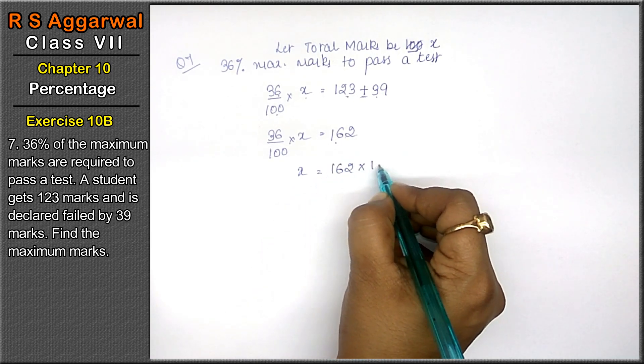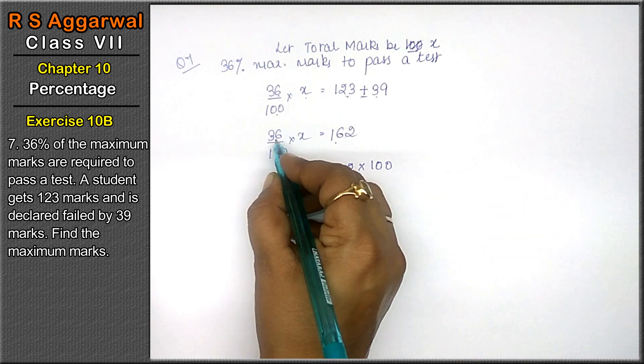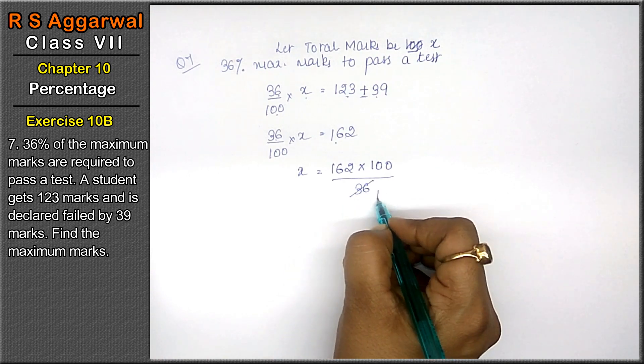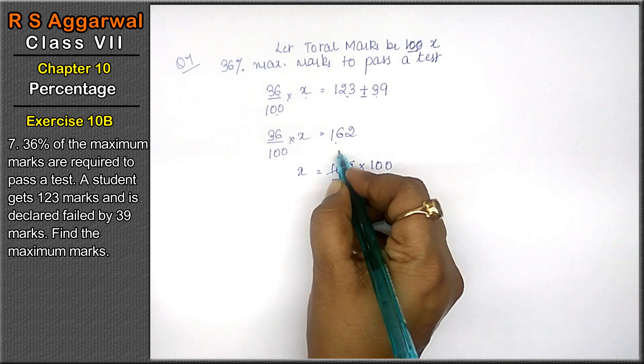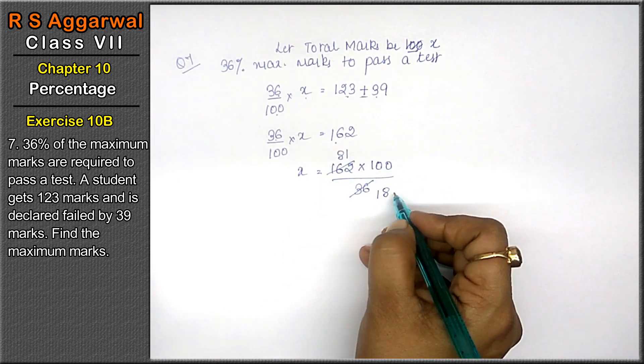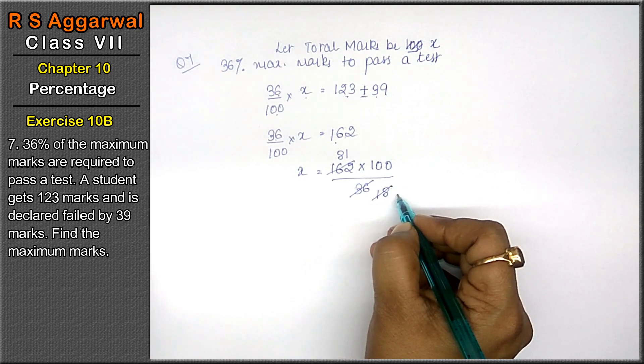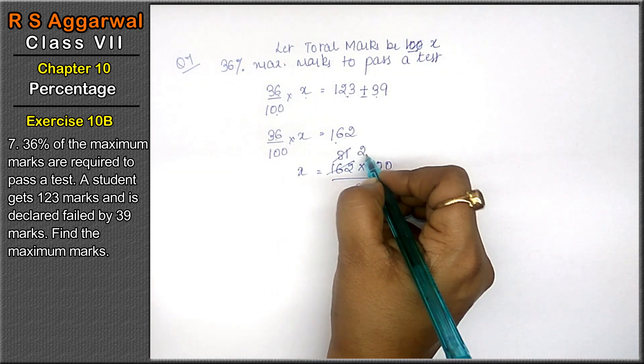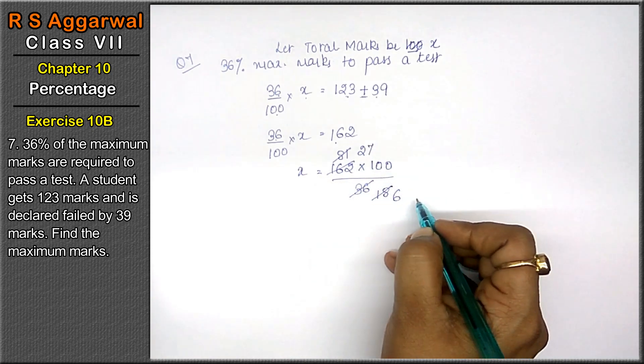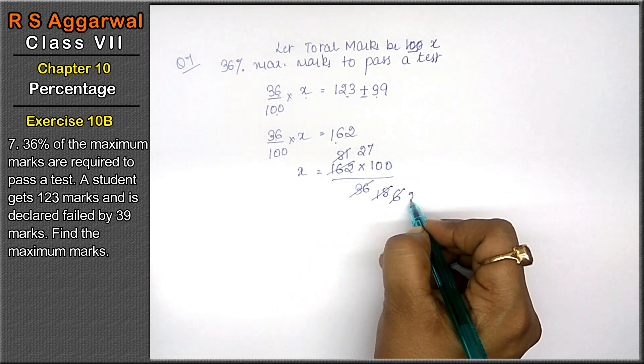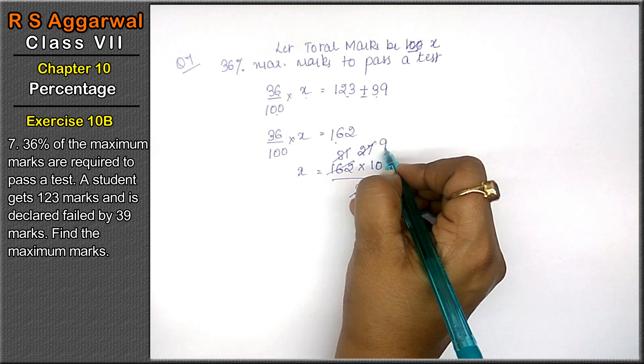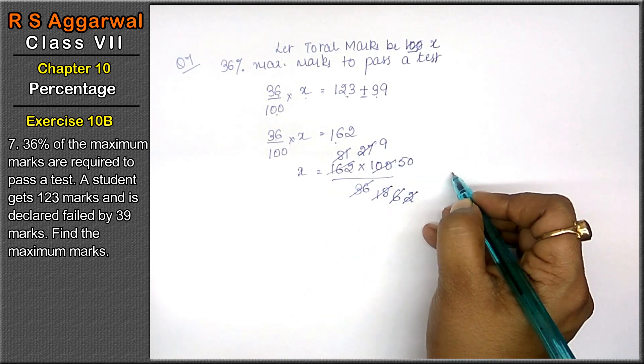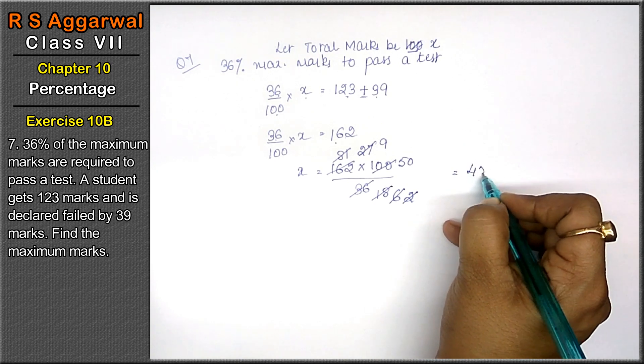100 multiply, it will go in the numerator, it will go in the denominator. 2 times 1 is 2, 2 times 8 is 16. 3 times 6 is 18, 3 times 2 is 6, 3 times 7 is 21. 2 times 5 is 10. The answer is 450.